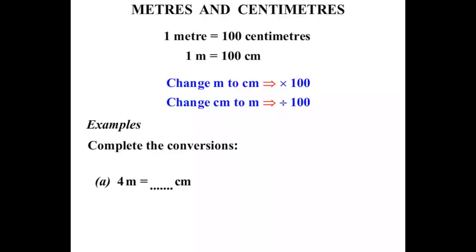Part A: 4 metres equals something centimetres. How many centimetres is 4 metres? Let's see what we are converting. We are starting with metres and we are changing it to centimetres. And we can see that if we do that we are going to times by 100. So we have 4 times 100, of course, is 400. So there we have 4 metres equals 400 centimetres.